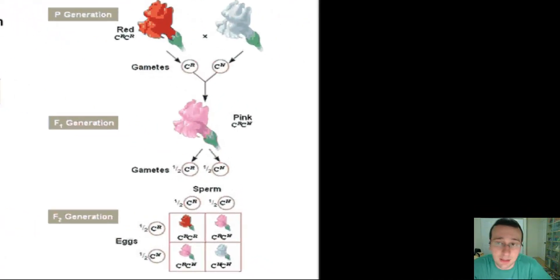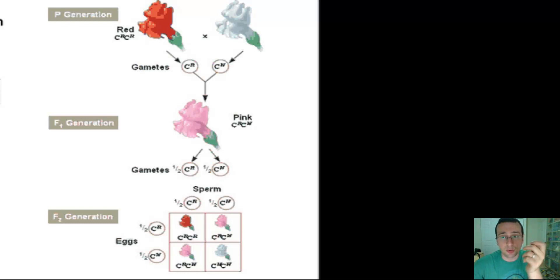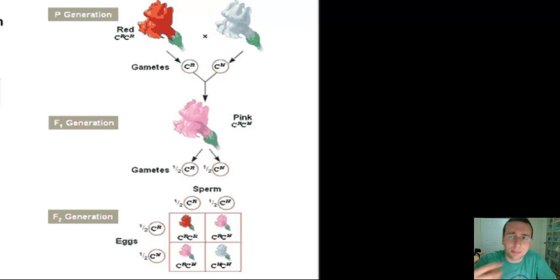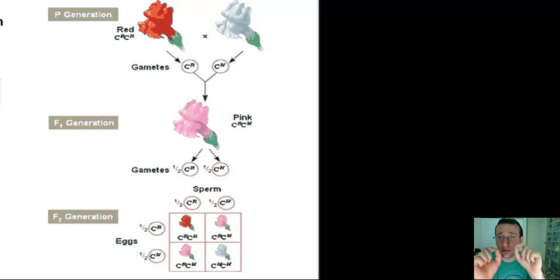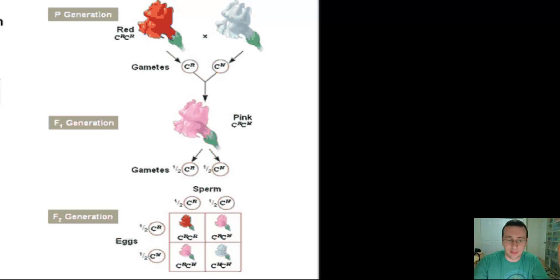Now we need to talk about incomplete dominance and co-dominance. Some traits do not obey Mendel's idea of what happens with pea plants. For example, when you have a red rose and a white rose and combine them, instead of getting all roses looking like the dominant red, you get a mixture — kind of like blending theory would suggest. But the genes are still not blended — you still have a big A and a little A separate from each other. What's happening is that the traits are speaking just as loudly as each other, and therefore you get a blended look — a pink flower.